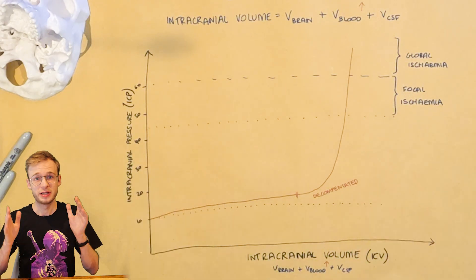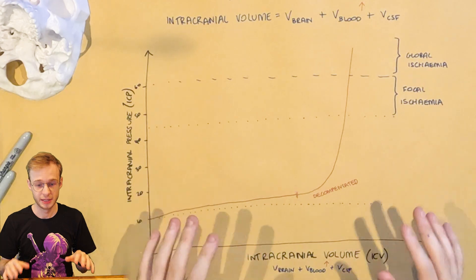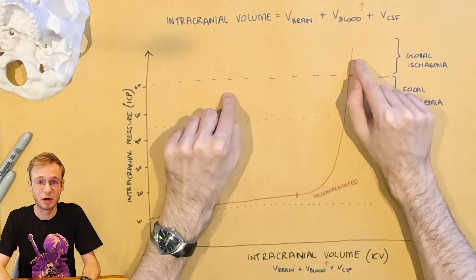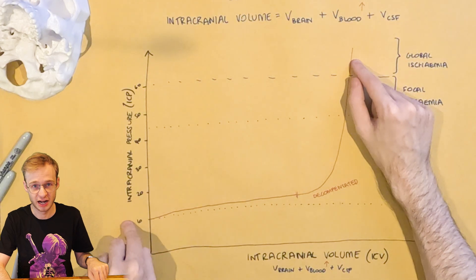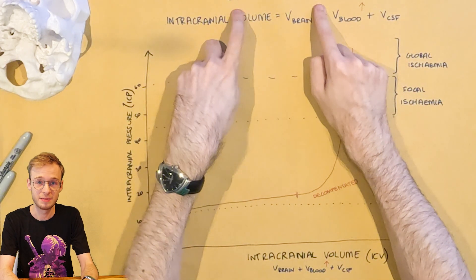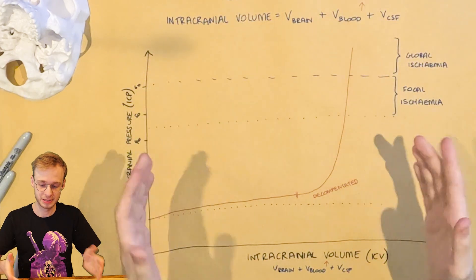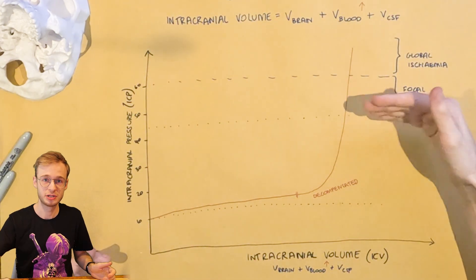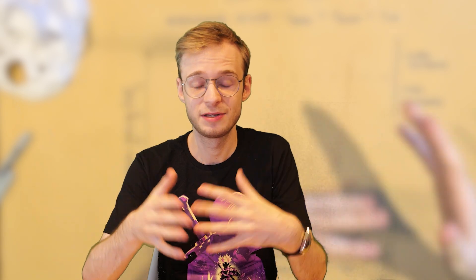So to summarize, the skull is a fixed volume container. It contains brain, blood and CSF. An increase in one must be offset by a decrease in the others. And if not, intracranial pressure must rise. When ICP goes up, CPP, cerebral perfusion pressure falls, and that leads to brain injury. And in severe cases, herniation, global ischemia, and death. This doctrine underpins so much of what people do in neurosurgery, trauma, and intensive care. And if you can understand these basic physiological mechanisms, I think that puts you nicely ahead of the curve.